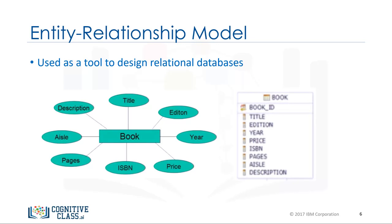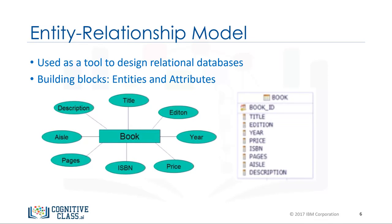In the ER model, entities are objects that exist independently of any other entities in the database. It is simple to convert an ER diagram into a collection of tables. The building blocks of an ER diagram are entities and attributes. Entities have attributes, which are the data elements that characterize the entity. Attributes tell us more about the entity. In an ER diagram, an entity is drawn as a rectangle, and attributes are drawn as ovals.